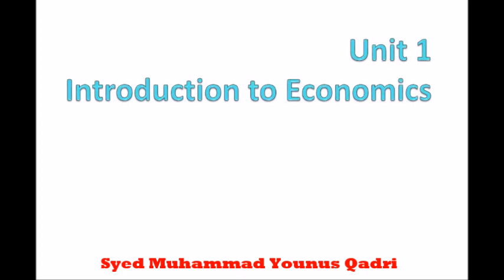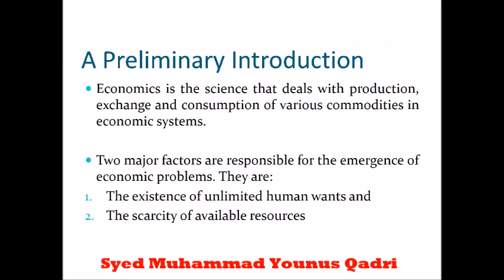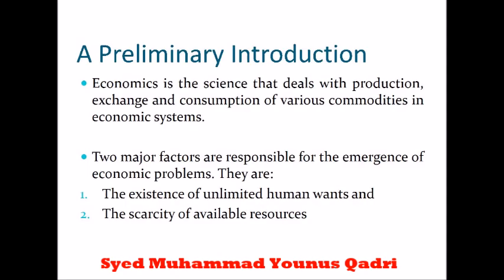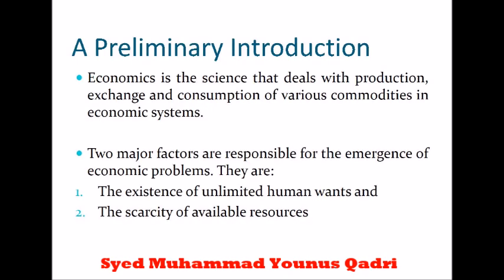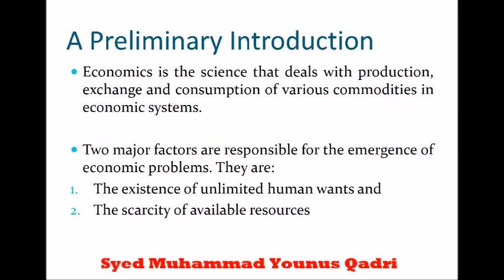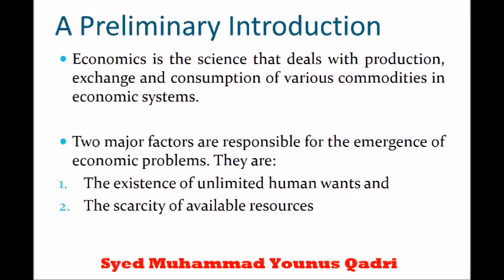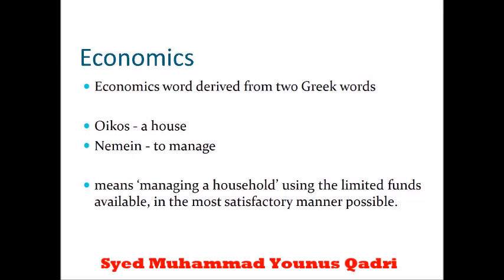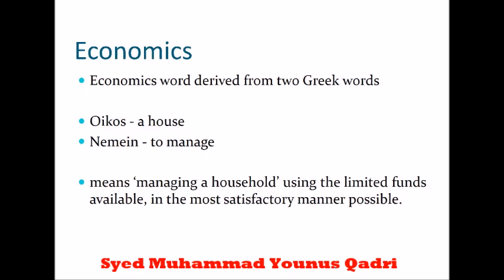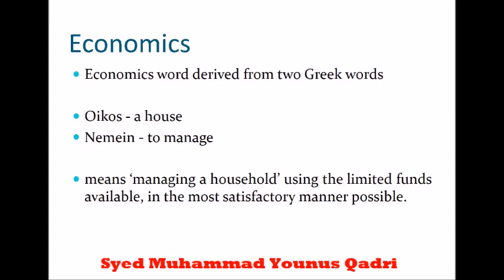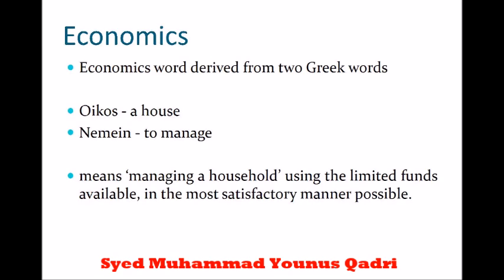Economics is a science that deals with production, exchange, and consumption of various commodities in the economic system. What do we mean by science? Science depends upon experiment — if you have theorized something, you have to prove it with experiment. If the experiment is conducted in a lab, it is called pure science. If conducted in society or among the population, it is termed social science. So economics is a social science, not a pure science. Everything in economics which is proven experimentally is part of economics; things which cannot be proven are not.